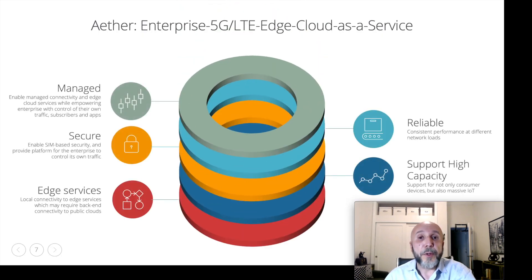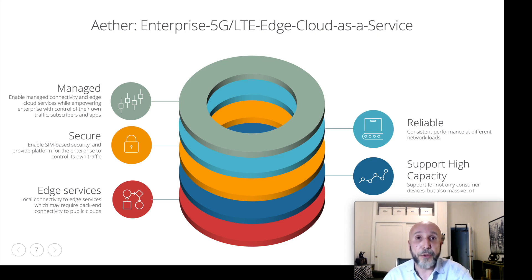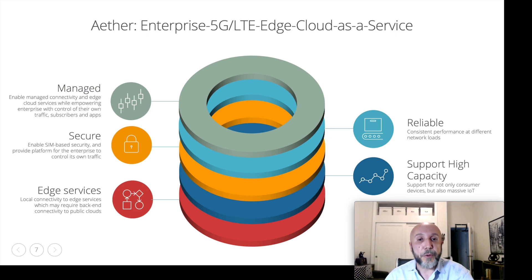Enterprises want both connectivity services and edge applications that will enable their digital transformation. The solution needs to be reliable, support high capacity, and be secure. In addition, a managed service—one akin to other cloud-based managed services enterprises get—is a preferred solution, as most enterprises will not want dedicated personnel to run these. Even when getting these as managed services, they will want the power to control their own local traffic, manage their own subscribers, set their own policies, and on-board their own edge cloud applications. Most applications will not only have an on-premise presence, but also backends in public clouds—think of inference and machine learning—which requires support for multi-cloud connectivity.